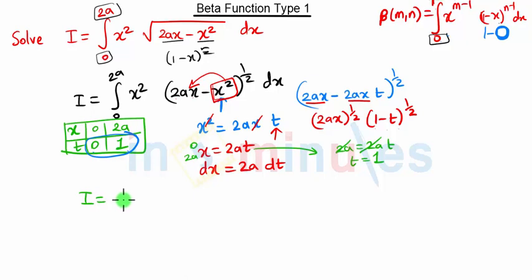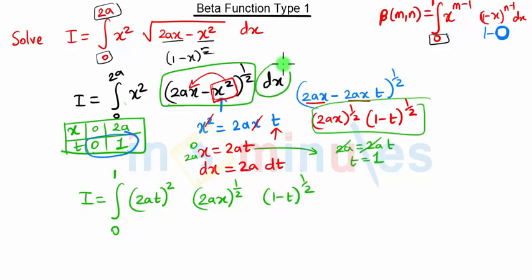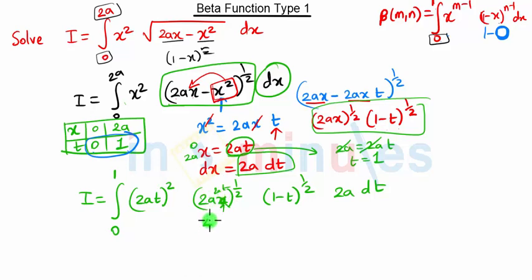So our new integration will be integration of 0 to 1. x squared becomes 2at the whole squared. The term 2ax minus x squared has been calculated as 2ax the whole raised to half, into 1 minus t the whole raised to half. And dx is 2a dt. Since x equals 2a·t, substituting gives this x as 2a·t, so this term becomes 4a squared·t, the whole raised to half.